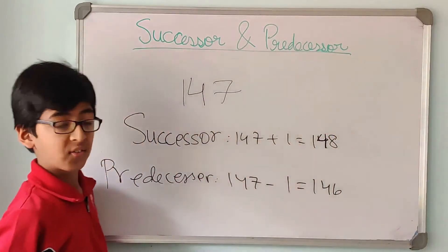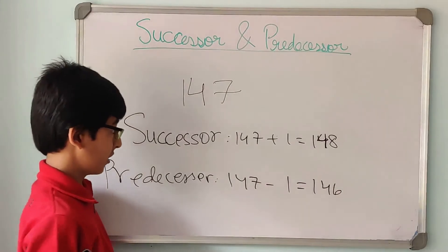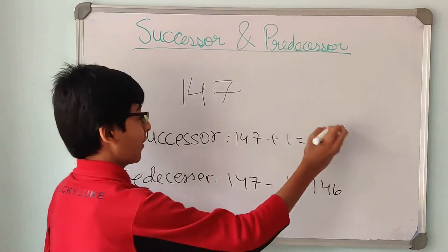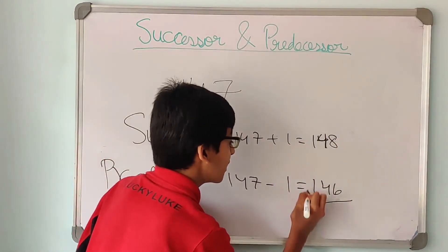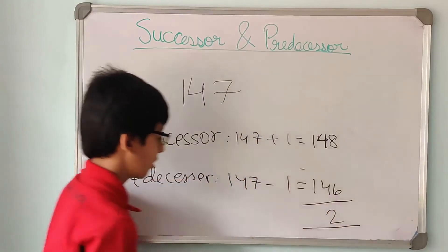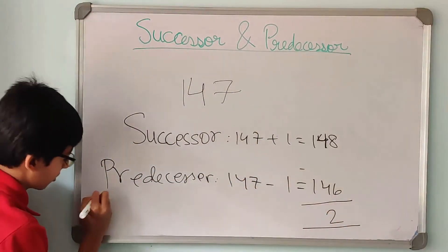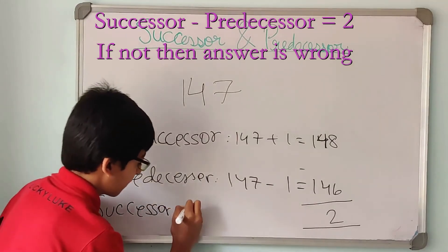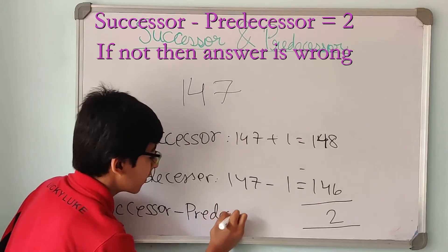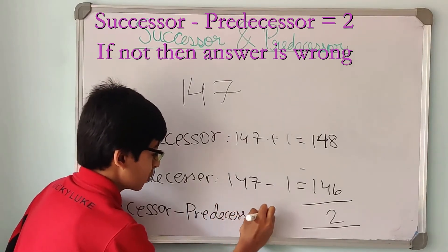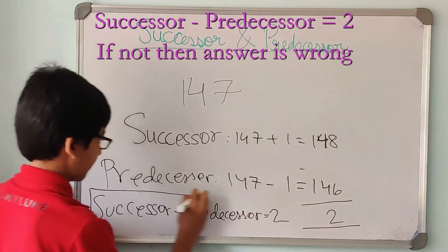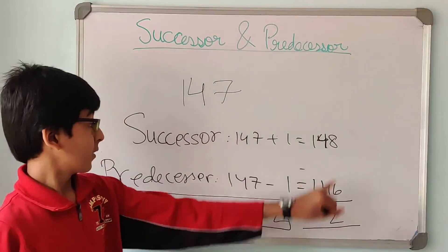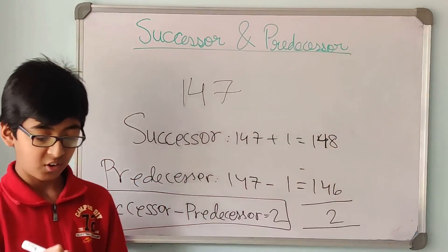Now remember in successor and predecessor that the difference, that is when we subtract the answers, the difference is always going to be 2. So this means that successor minus predecessor has to be 2. If the answer is 2, if the difference is not 2, that means answer is wrong.